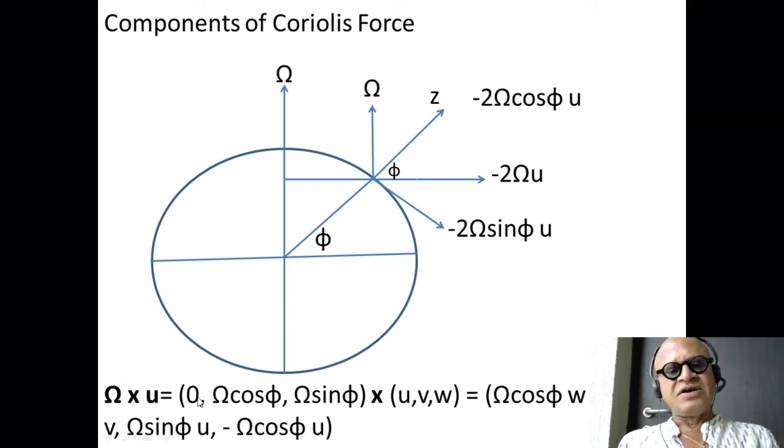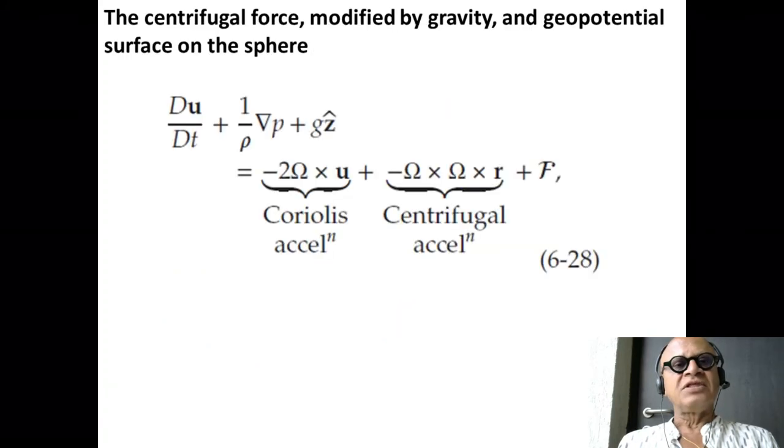So that's in the direction of gravity—that's not going to matter. This is basically what we said: things are pushed to the right of the direction of motion in the northern hemisphere because that's the counterclockwise rotation, or cyclonic as we will see later on. So Ω × u then can be written as (0, Ω cos φ, Ω sin φ) × (u, v, w)—both are vectors here. So what does it result in? Ω cos φ w - Ω sin φ v, that's in the x direction; Ω sin φ u is in the y direction; and -Ω cos φ u is in the z direction.